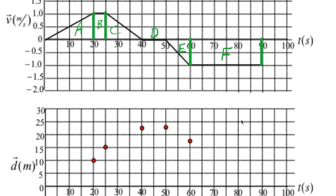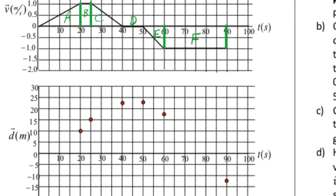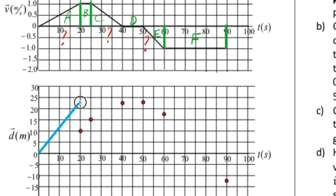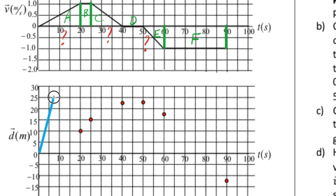Next, we need to figure out what the D versus T graph looks like based on the V versus T behavior. On a D versus T, a flat line means the object is at rest. A positive slope means constant positive velocity, steeper means faster. A negative slope means constant negative velocity. But none of these straight lines help us when it comes to acceleration — we'll get to that.